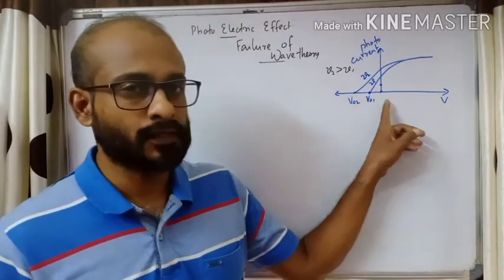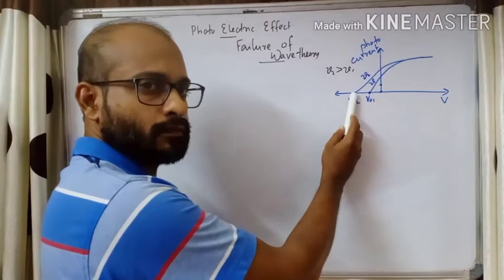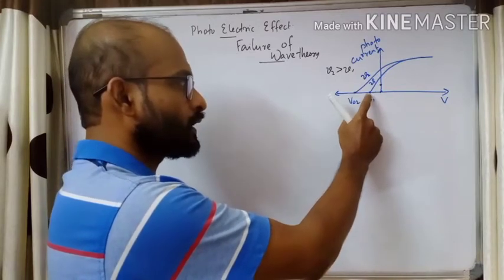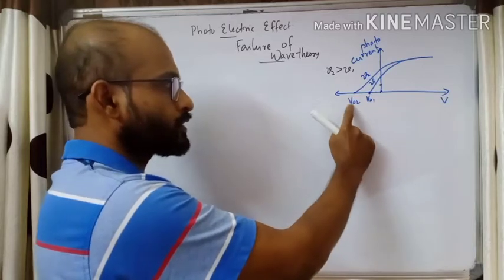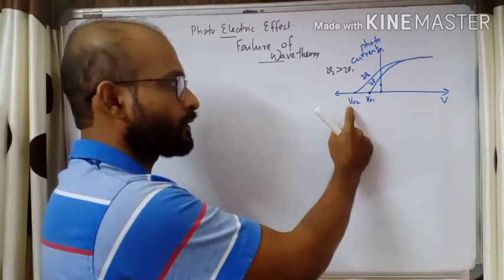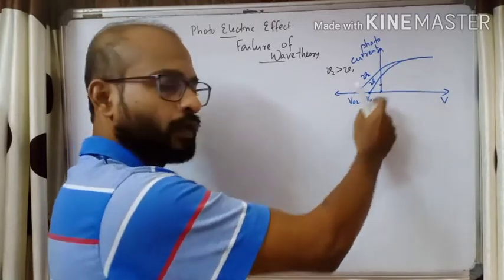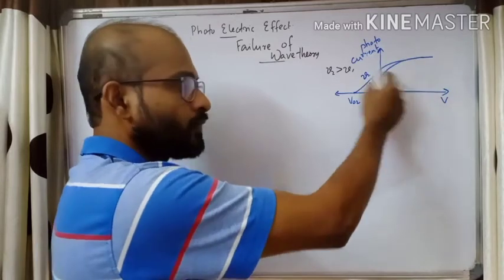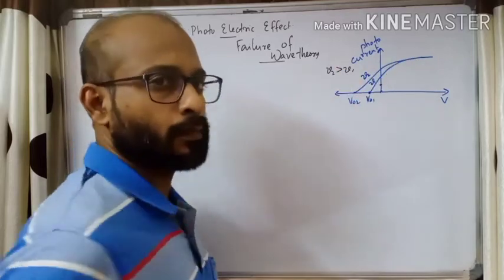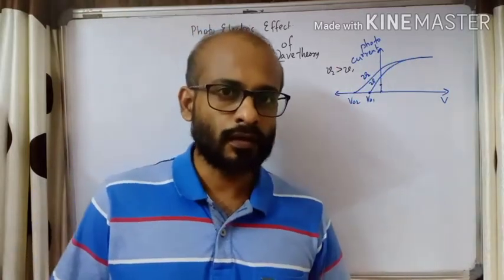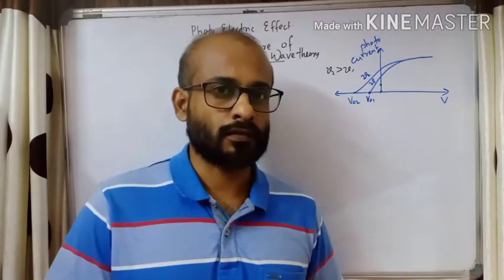Here we can see in the graph that there are two stopping potentials, meaning two different maximum kinetic energies. But the saturation current is the same — saturation current depends on intensity, so it is independent of intensity. The maximum kinetic energy of electrons is independent of intensity; when we increase the intensity of incident radiation, the emitted electrons will have the same kinetic energy. There is no effect — it is independent. That is the first failure.